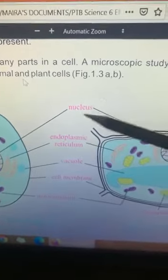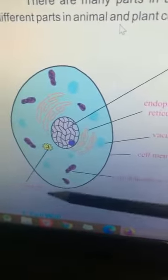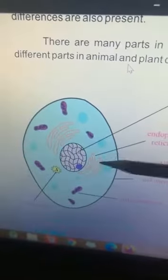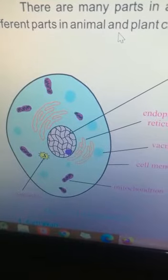Now here is a nucleus. Nucleus is also present in both animal and plant cells. Centrioles are present only in animal cells and these are not present in plant cells.